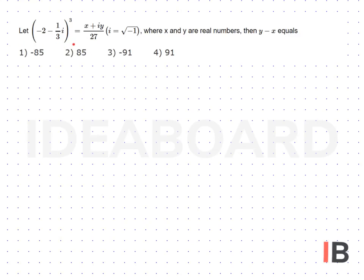Let (-2 - 1/3i)³ equal (x + iy)/27, where i equals the square root of minus 1 and x and y are real numbers. Then y minus x equals?